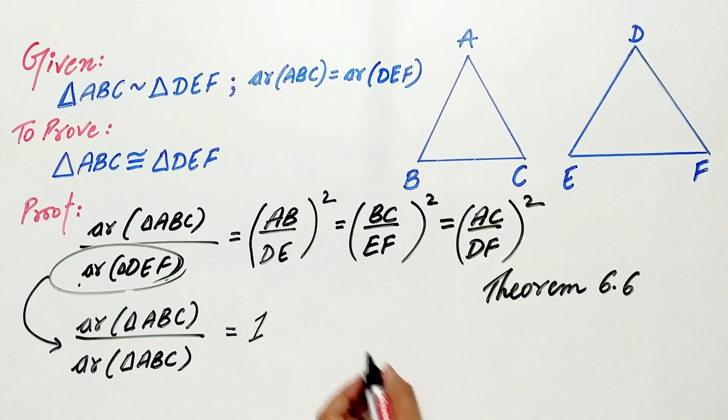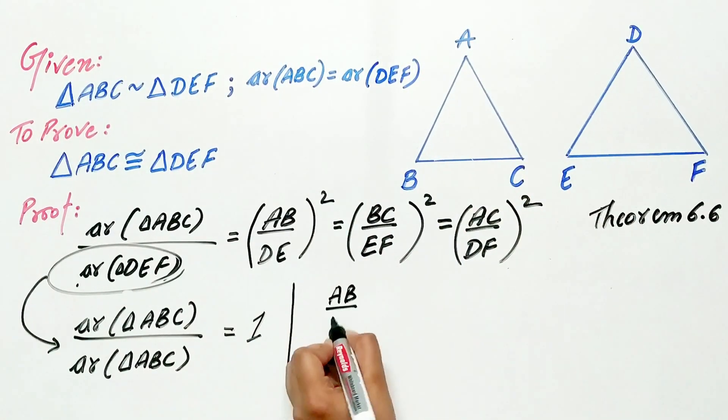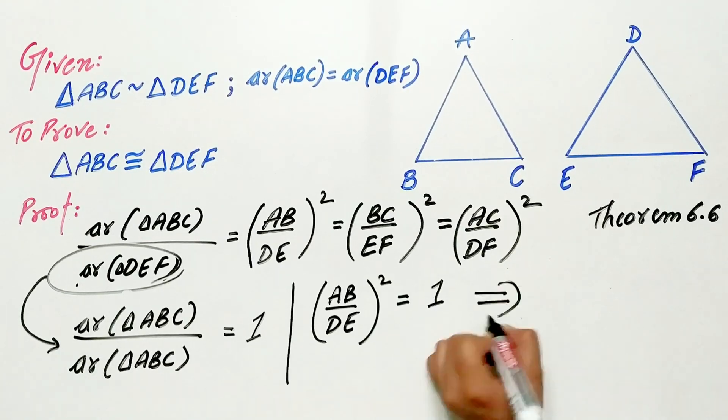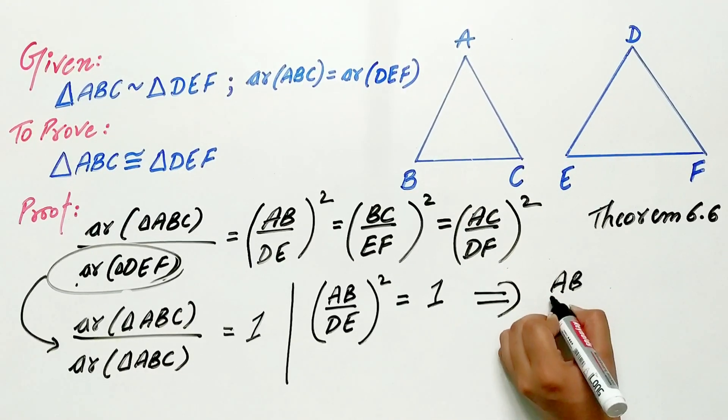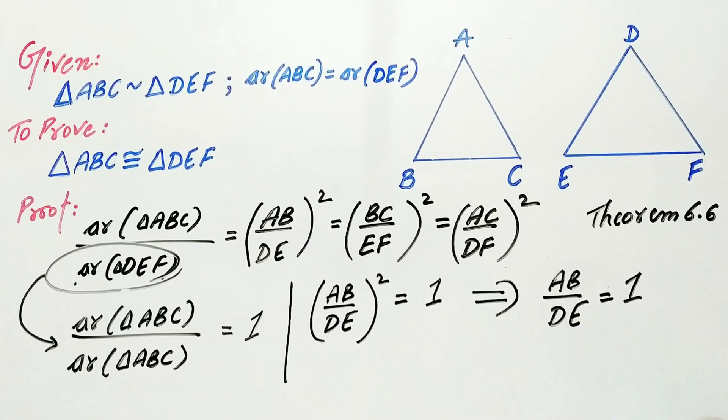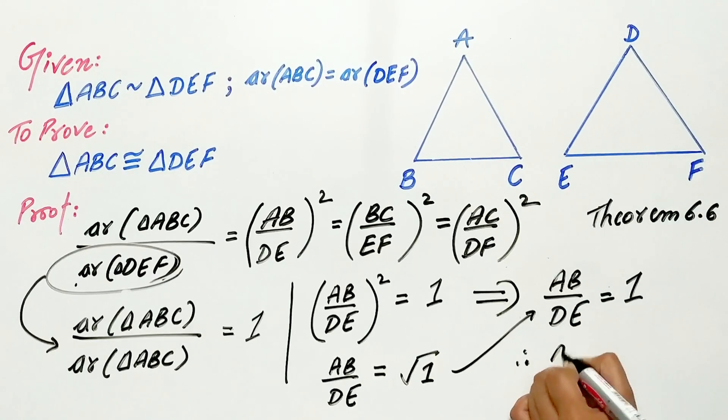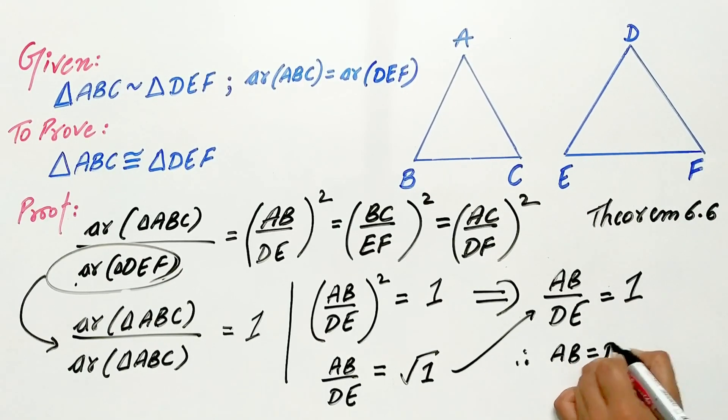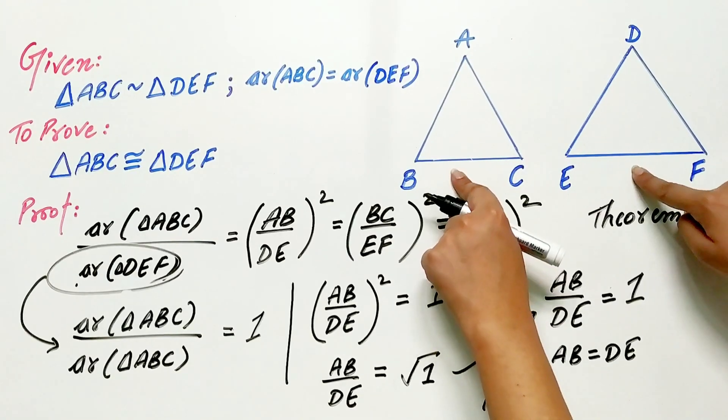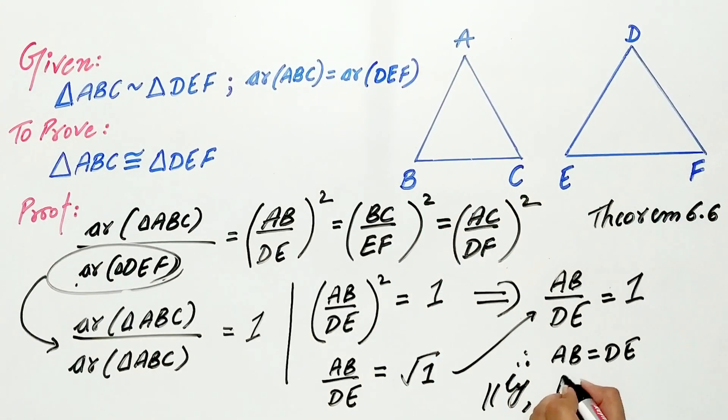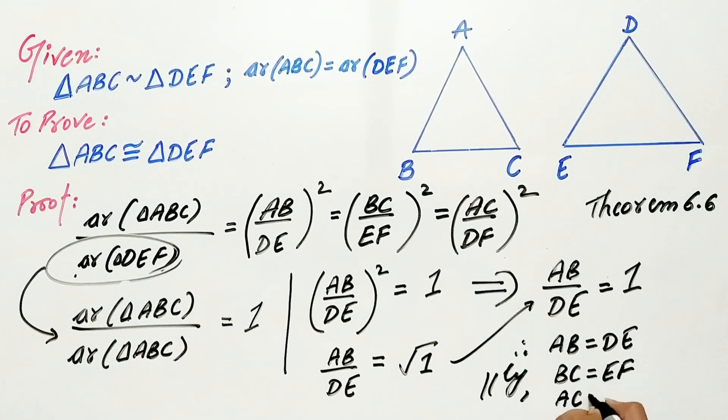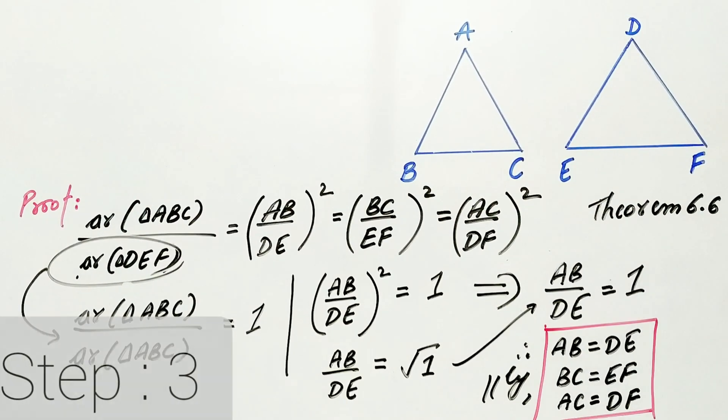Now, listen carefully. Hence, AB by DE square is equal to 1. So, AB by DE is equal to 1. That means AB is equal to DE. Similarly, BC is equal to EF and AC is equal to DF.